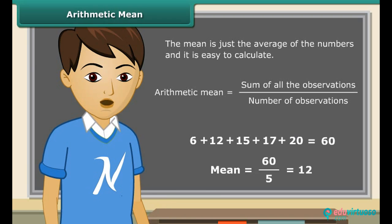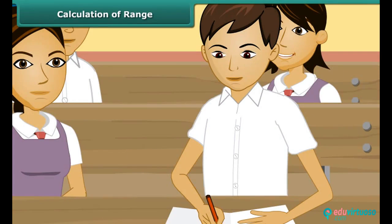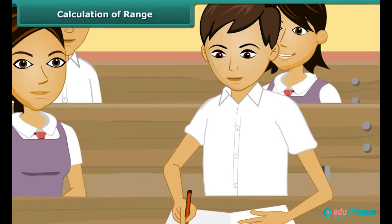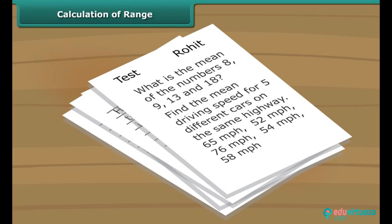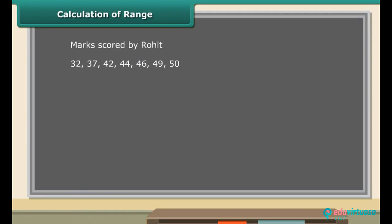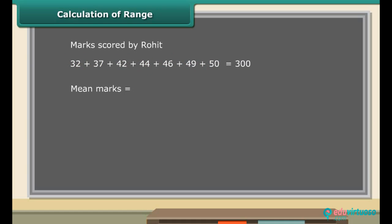Therefore, the mean of the above numbers is 12. Rohit is an intelligent and very studious boy in the class. He gave his maths test 7 times to improve his marks. The data shown here displays the marks scored by Rohit. Can you calculate the mean test marks of Rohit? Let us first add up the marks — the sum is 300. We know he gave the maths test 7 times. So, the mean marks of Rohit are equal to 300 divided by 7, which is equal to 42.86.